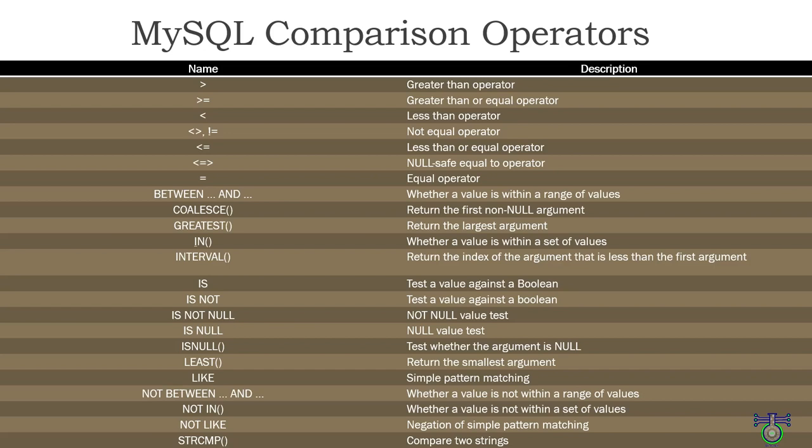The LIKE operator is used to match patterns in strings, often used with wildcard characters such as % (percent) and _ (underscore). For example, the expression name LIKE 'joe%' returns all names that start with 'joe'. The IN operator is used to compare a value against a list of values — for example, color IN ('red', 'green', 'blue') returns true if the color is either red, green, or blue. The NOT operator is used to negate a comparison — for example, NOT x = y returns true if x is not equal to y and false otherwise.